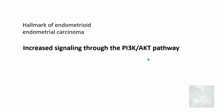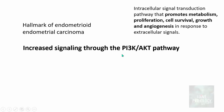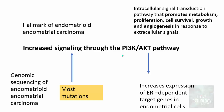The hallmark of endometrioid type endometrial carcinoma in terms of pathogenesis is increased signaling through the PI3K/AKT pathway. This pathway is an intracellular signal transduction pathway which promotes metabolism, proliferation, cell survival, growth, and angiogenesis. Genomic analysis of these cancers reveals many mutations causing increased signaling of this pathway, which in turn increases the expression of estrogen receptor-dependent target genes in endometrial cells.